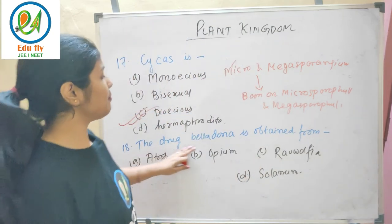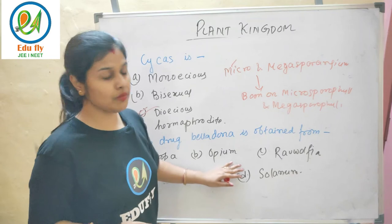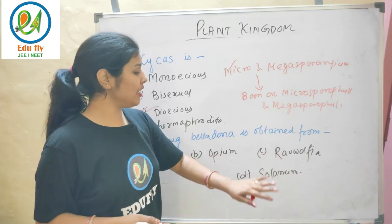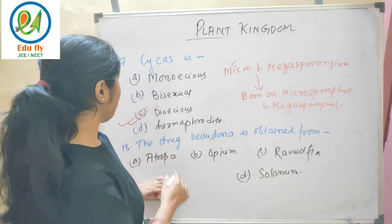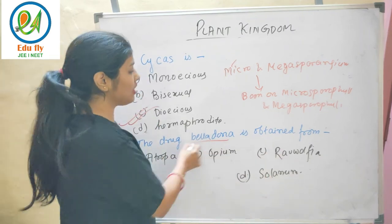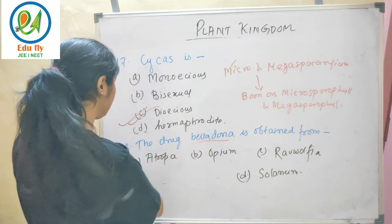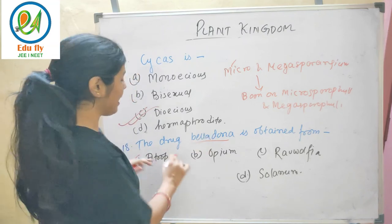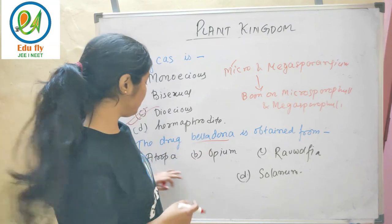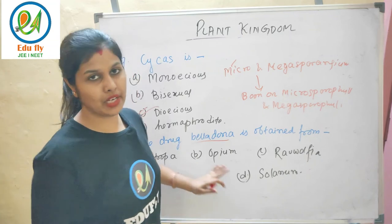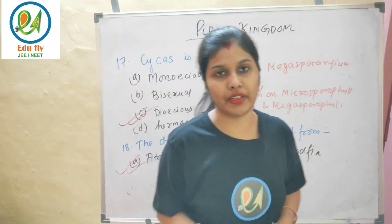The drug belladonna is obtained from Atropa belladonna. Belladonna is a very common alkaloid drug obtained from Atropa belladonna. It is used to relieve pain.